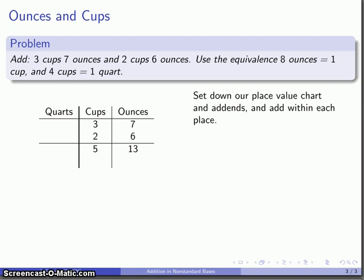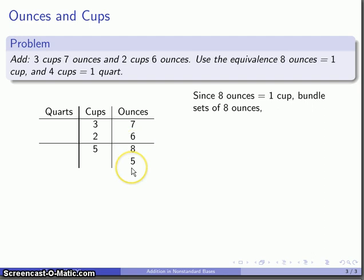Now, the next thing we'll want to do is bundle and trade. So, this 13 ounces, well, we do have an equivalent. 8 ounces is equal to 1 cup, so I can bundle a set of 8 ounces and have 5 ounces left over. So, there's my 13 ounces originally. And I'm going to trade the 8 ounces for 1 more cup in the next place.